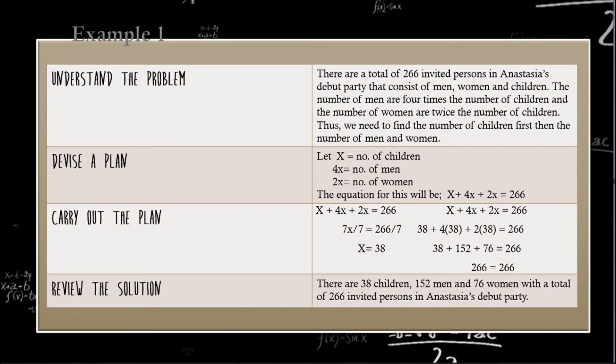Now, if I'm going to state the problem, it will be like this. There are a total of 266 invited persons in Anastasia's debut party that consists of men, women, and children. The number of men are four times the number of children and the number of women are twice the number of children. Thus, we need to find the number of children first, then the number of men and women. Let X = no. of children because the word children always repeats in the problem. So it will be our clue to know the number of men and to know the number of women. And let 4x = no. of men because the number of men are four times the number of children. And let 2x = no. of women because the number of women are twice the number of children. The equation that I'm going to use is X + 4x + 2x = 266.